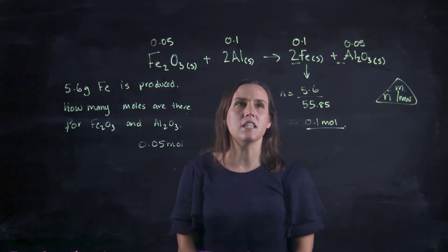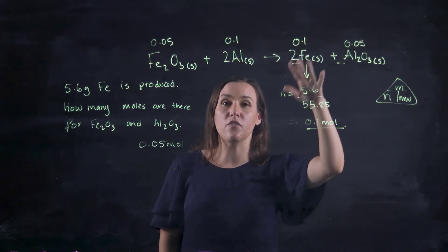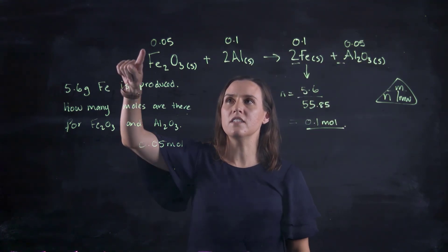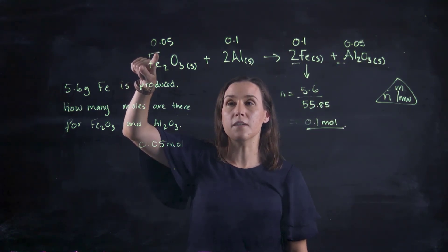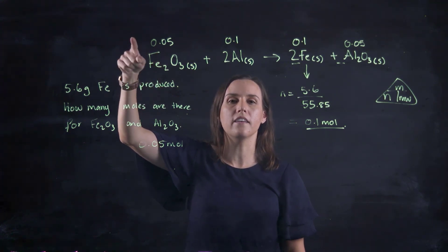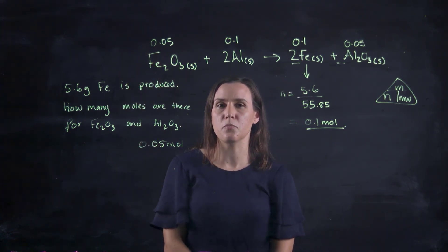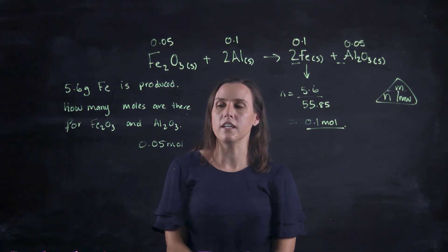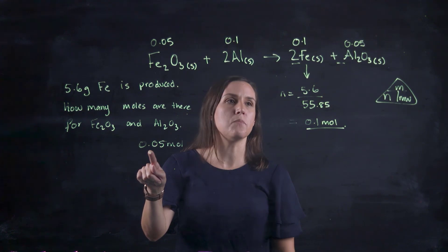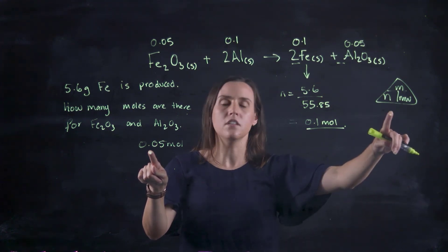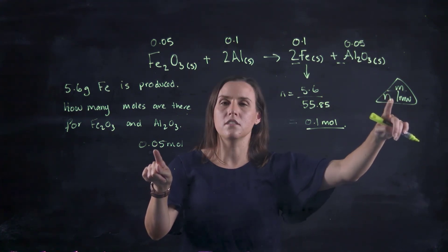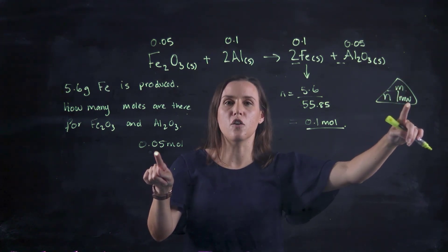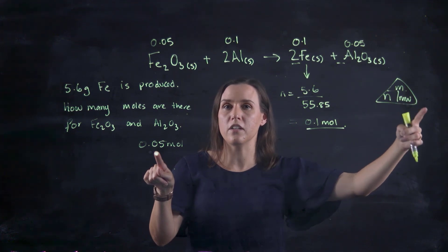So remember, when using this, if we've got a mass, we need to convert it to moles. We can use that relationship. And now I could even say how many grams of Fe2O3 is required to produce this 5.6 grams of product, assuming 100% conversion and no limiting reagents. So that would be just simply putting it back into this triangle. I know my number of moles. I can work out the mass if I can firstly solve for the molecular weight from the periodic table.